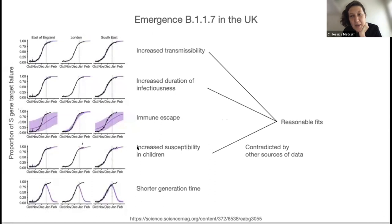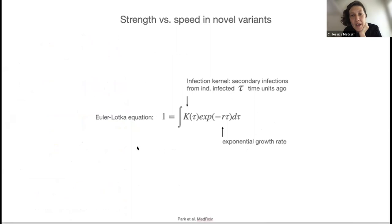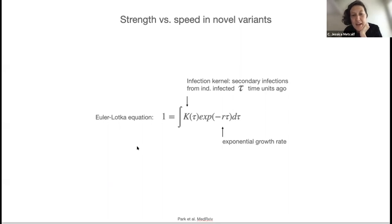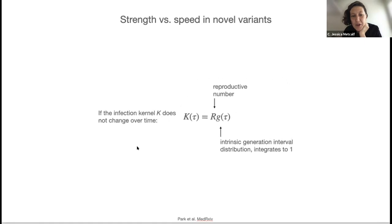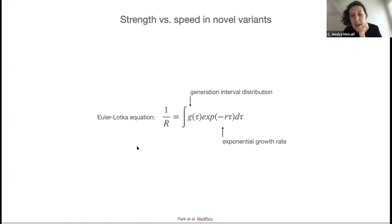One thing going on under the hood is assumptions about how R0 and the generation interval actually work. We can step back and take the workhorse of demography, the Euler-Lotka equation, which tells us that if we think of demography as a recursion, births now must be the results of individuals born in the past. The infection kernel K(tau) is equivalent to the L(x)M(x) — survivorship times reproduction at every age — but now we're thinking in terms of infection tau time units. We can also think of that infection kernel as R, our reproductive number, times the intrinsic generation interval distribution. This gives us a Euler-Lotka equation that includes R on one side and the exponential growth rate on the other.